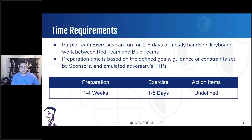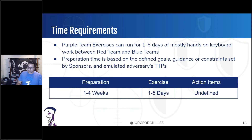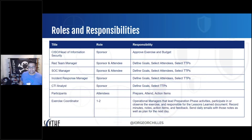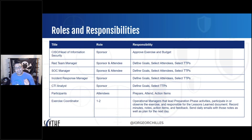Then you have the exercise — maybe a day, maybe a few hours — followed by action items. We've had action items that took over a year to resolve in a large organization. For roles and responsibilities: your CISO or security manager, CTI analysts, participants, and most importantly an exercise coordinator. You want someone good at project management who can bring everyone together and is not part of either team — especially if red and blue haven't gotten along, you want a neutral party.